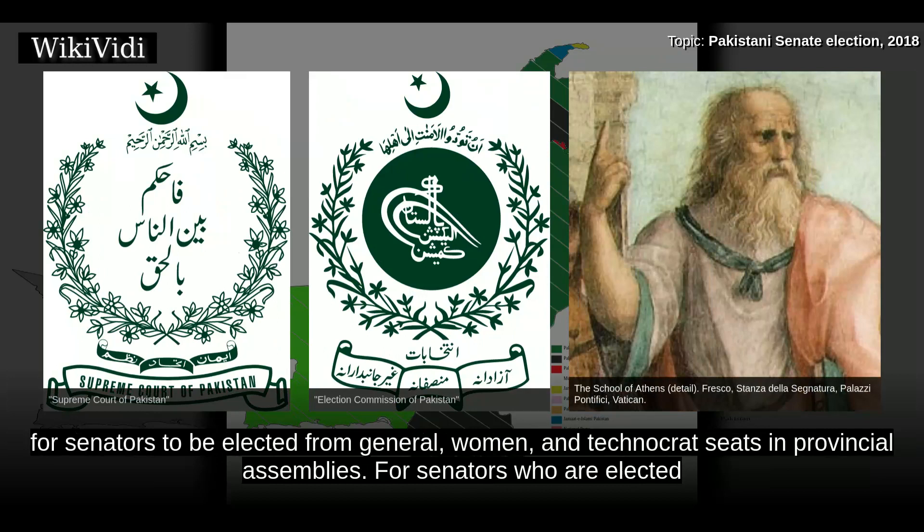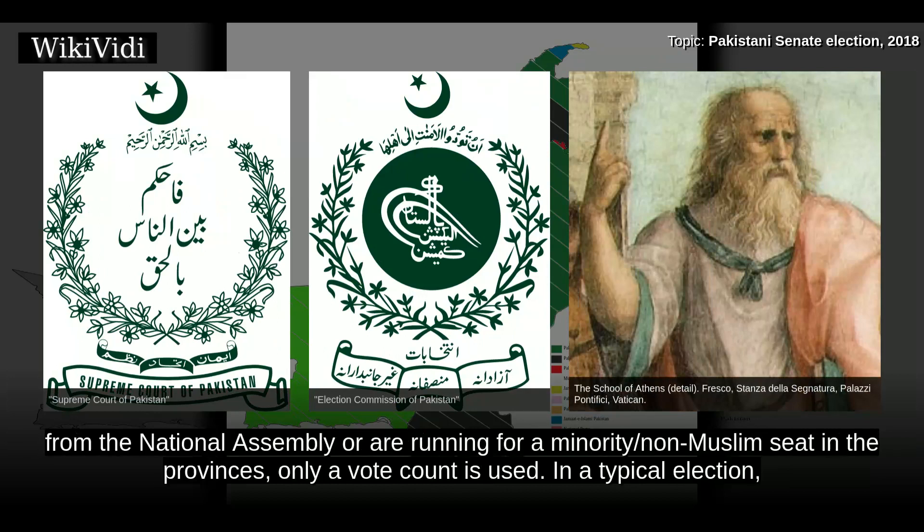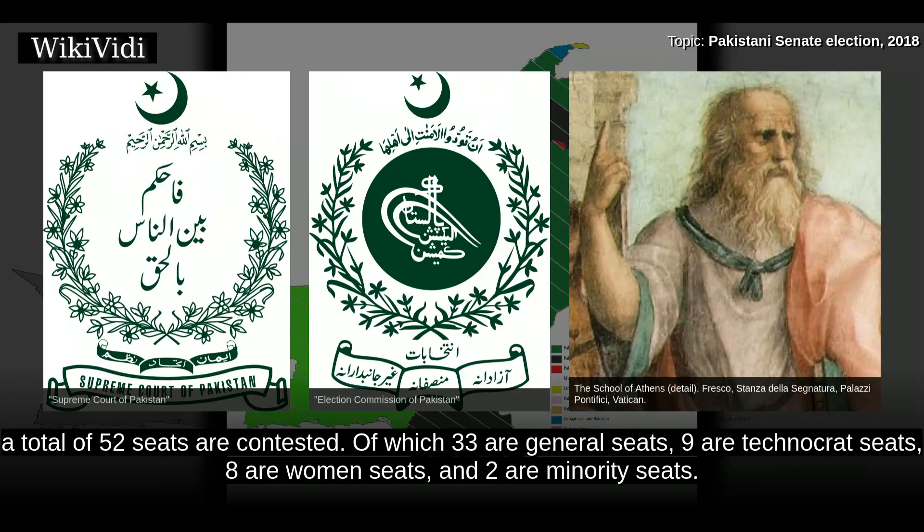For senators who are elected from the National Assembly or are running for a minority/non-Muslim seat in the provinces, only a vote count is used. In a typical election, a total of 52 seats are contested, of which 33 are general seats, 9 are technocrat seats, 8 are women seats, and 2 are minority seats.